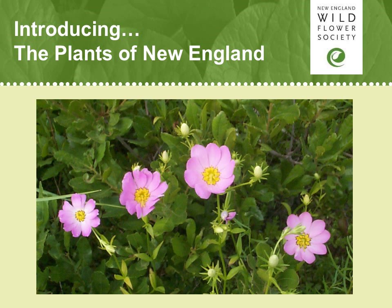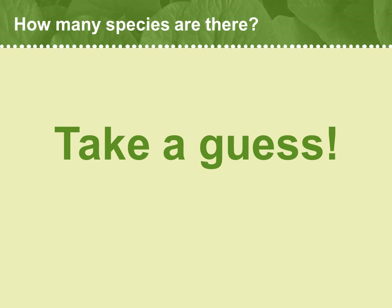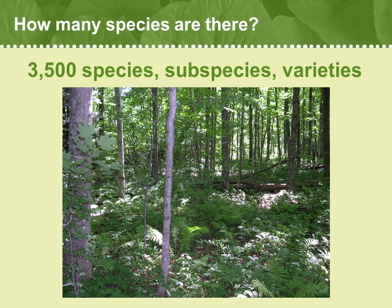Here you're going to get a great introduction to the plants of New England. You'll get a broad overview of the diversity of plants in our region and the major reasons why our flora is quite diverse in species. But let's start with a question: how many species of plants do you think there are in all of New England? Take a wild guess. There are about 3,500 species of plants in New England — that includes subspecies and varieties.